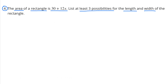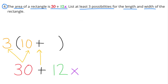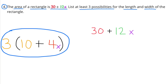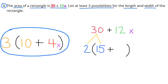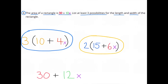Number 4: The area of a rectangle is 30 plus 12x. List at least three possibilities for the length and width. Starting with 30 plus 12x: 30 can be broken down as 3 times 10, and 12x as 3 times 4x — so one factored form is 3 times (10 plus 4x). A second equivalent expression: 30 plus 12x is 2 times 15, plus 2 times 6x, giving 2 times (15 plus 6x).